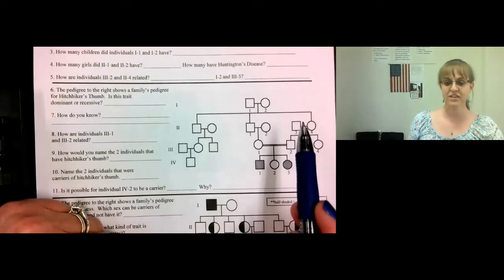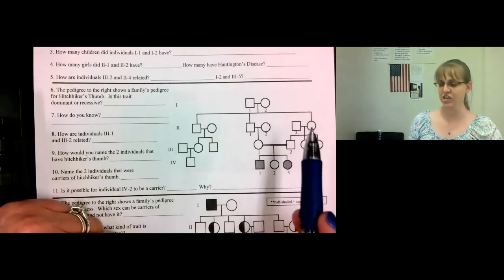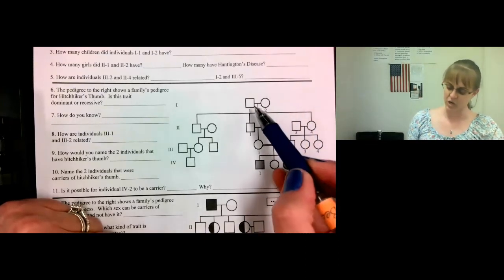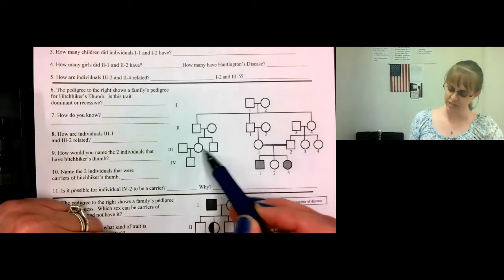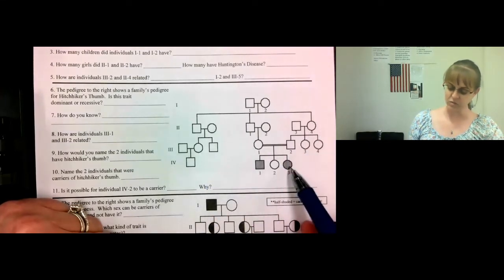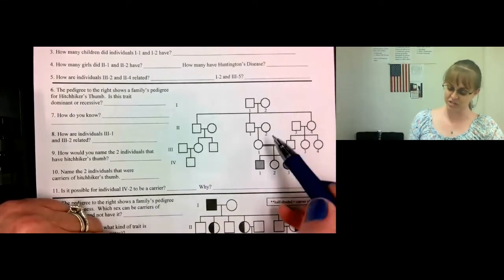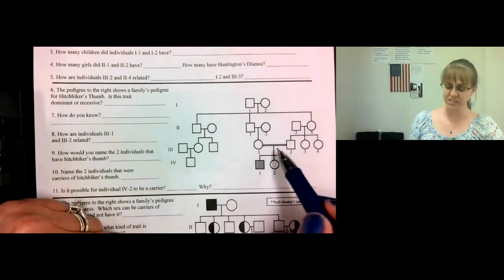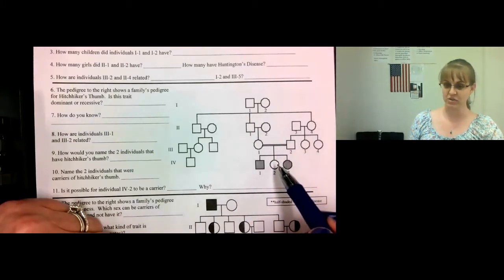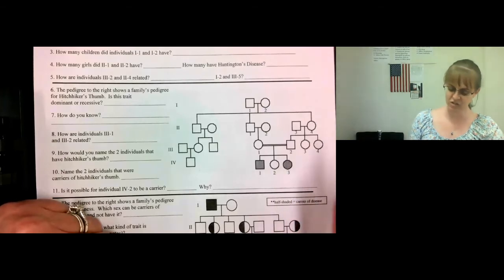All right, dominant or recessive? This is Hitchhiker's Thumb. We don't have it, we don't have it, we don't have it, and then all of a sudden we have it. So all these generations, nobody saw it, and then all of a sudden it appears. So this must be a recessive trait.